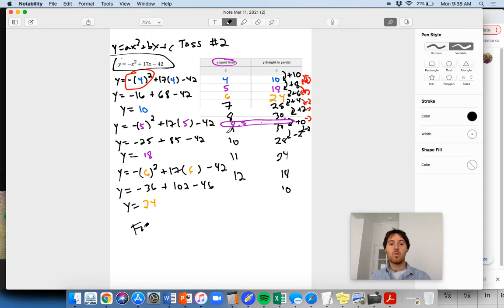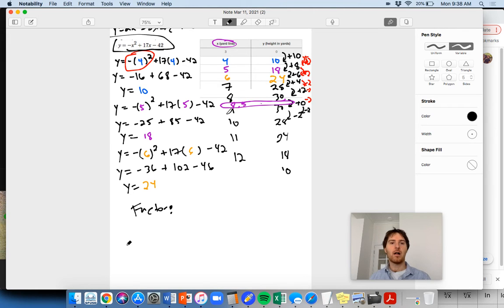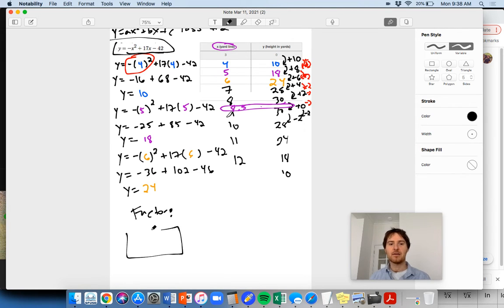And then what is factored form good for? This is not factored form, this is standard form. Standard form has no parentheses in it. It's written in the form y equals ax squared plus bx plus c. So here our a is negative one, our b is 17, our c is negative 42.